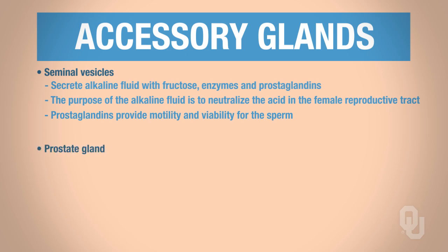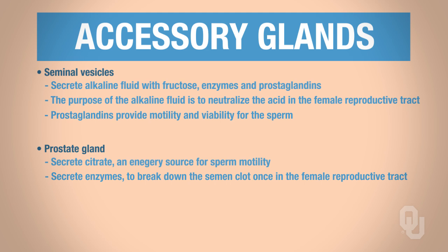The prostate gland is another accessory gland. The prostate gland secretes citrate, which is an energy source for sperm motility, and enzymes that will break down the semen clot once it is in the female reproductive tract. The semen clots during ejaculation and is then broken down once it's inside the female reproductive tract. The last accessory gland is the bulbal urethral glands. These glands secrete a fluid that contains mucus, which serves as a lubricant.